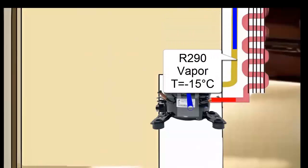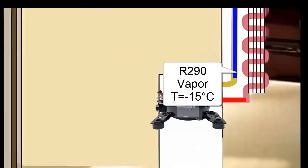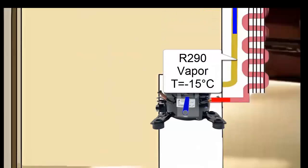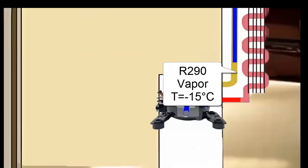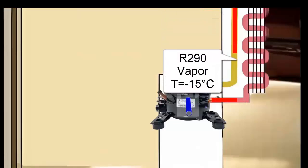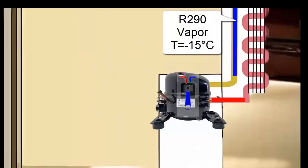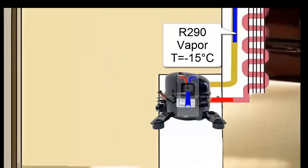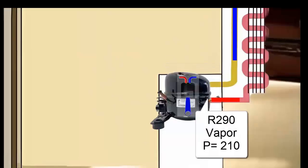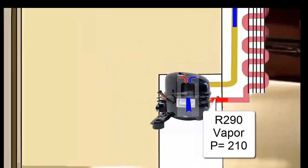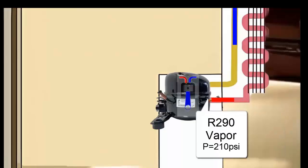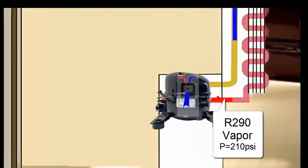The pressure and temperature of the R290 refrigerant increase significantly in the compressor. The pressure of the R290 at the compressor's exit reaches a value close to 210 pounds per square inch. The temperature of the R290 at the compressor's exit may be around 60 degrees Celsius.